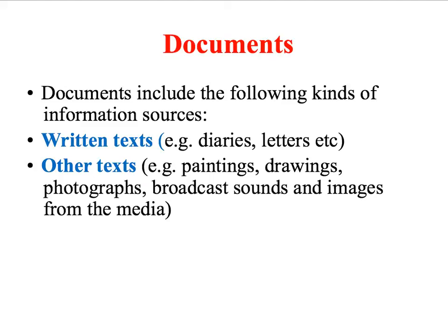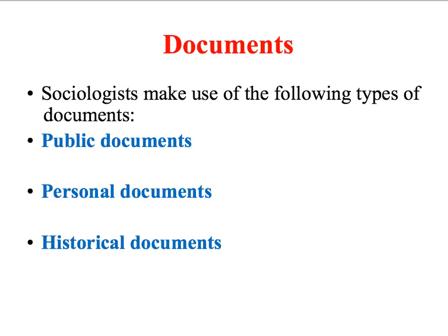When we're talking about qualitative data, we're talking about non-numerical data, and this can take many different forms. Sociologists might make use of the following types of documents when carrying out secondary research. Firstly, they might want to use public documents, which are produced by organisations — that might include documents produced by government departments, businesses, schools, universities, pressure groups, charities, and of course the mass media.